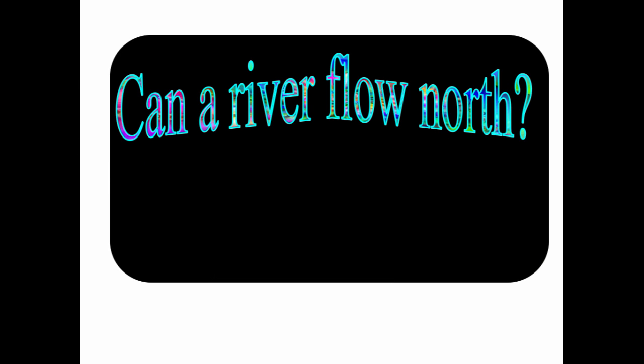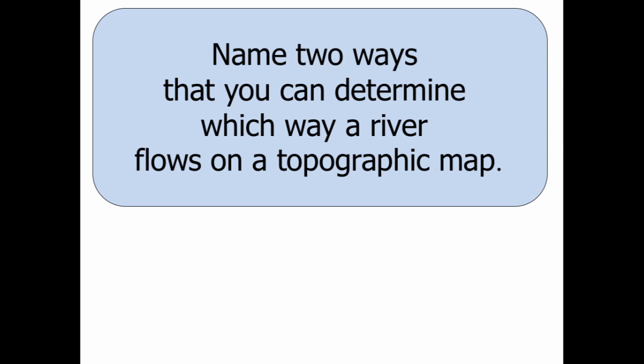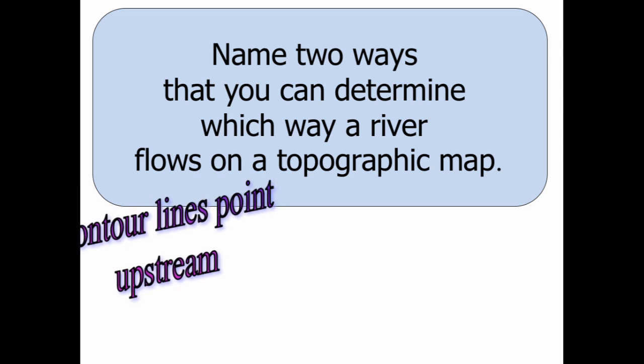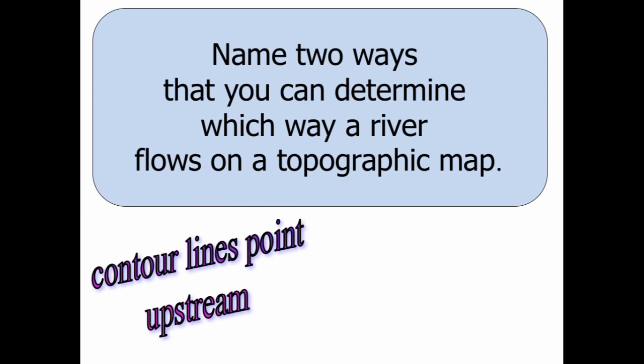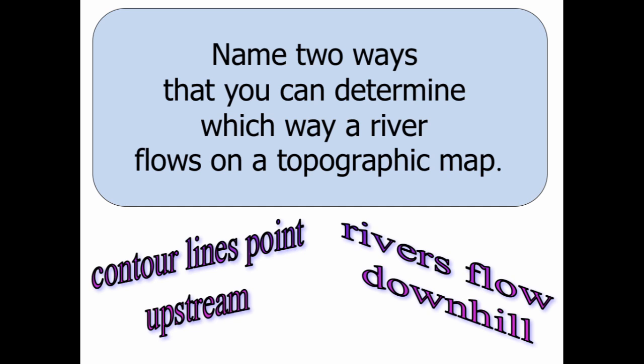Can a river flow north? It's a big misconception. No river can ever flow north. That is incorrect. Yes, a river can flow north. And in fact, one of the biggest rivers in the world does so. So let's name two ways that you can determine which way a river flows on a topographic map. Remember the contour lines, that V, the point points upstream. And rivers do always flow downhill. So these are the two ways that you can always determine which way water is flowing on a topographic map. Pause that and write that down. Put big stars around it.